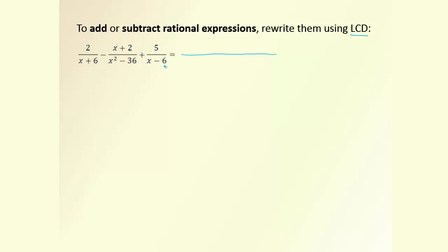These two denominators are already in factored form, but the middle one factors into (x + 6)(x − 6). To change the first fraction to match the new common denominator, we had (x + 6) already; what's new is (x − 6). So the numerator 2 will be multiplied by the missing bracket (x − 6). We have a minus and (x + 2), so we write minus and make sure to put a bracket around (x + 2). This part doesn't need to be multiplied by anything because the denominator didn't change.